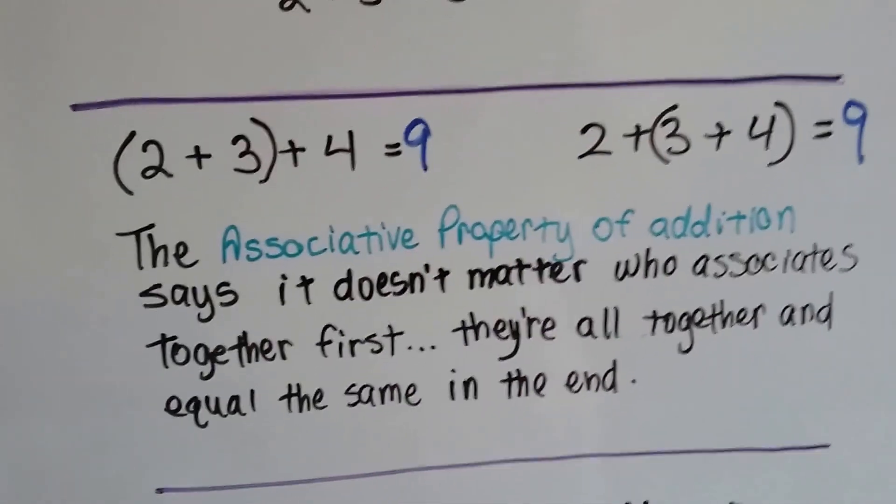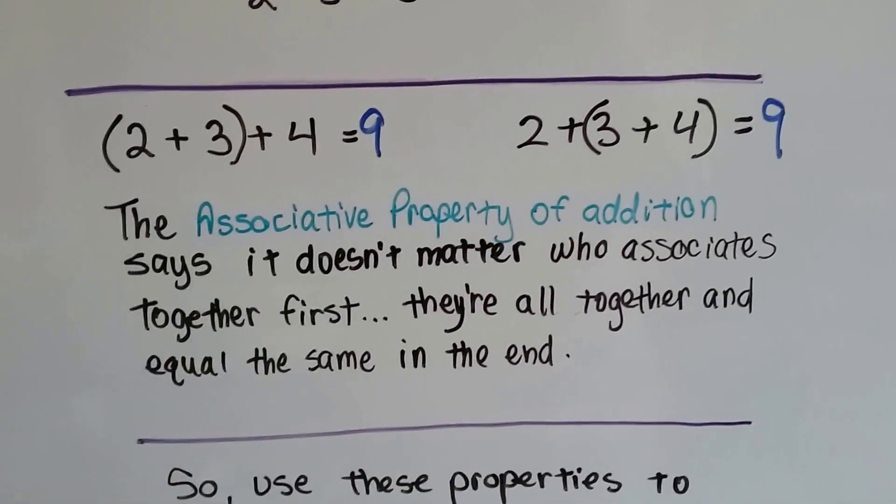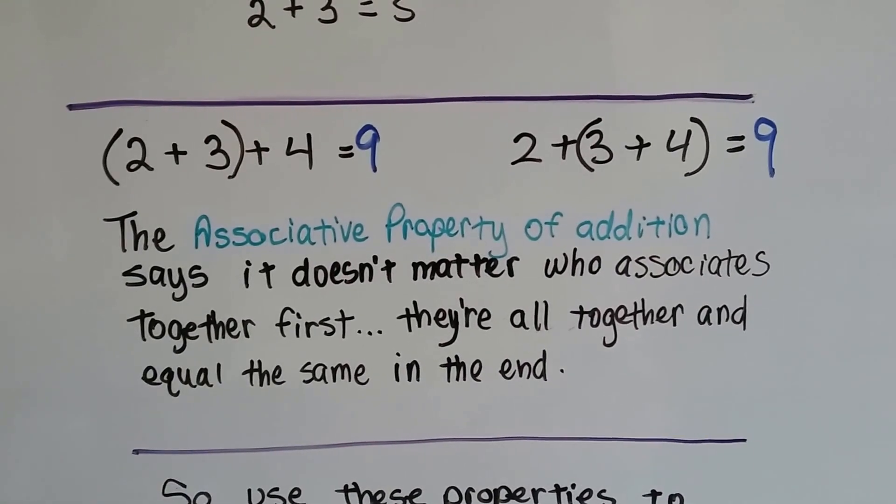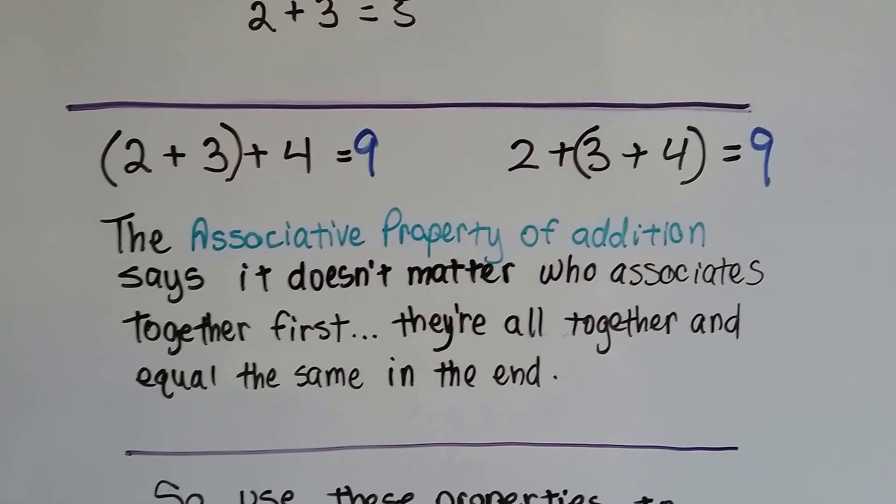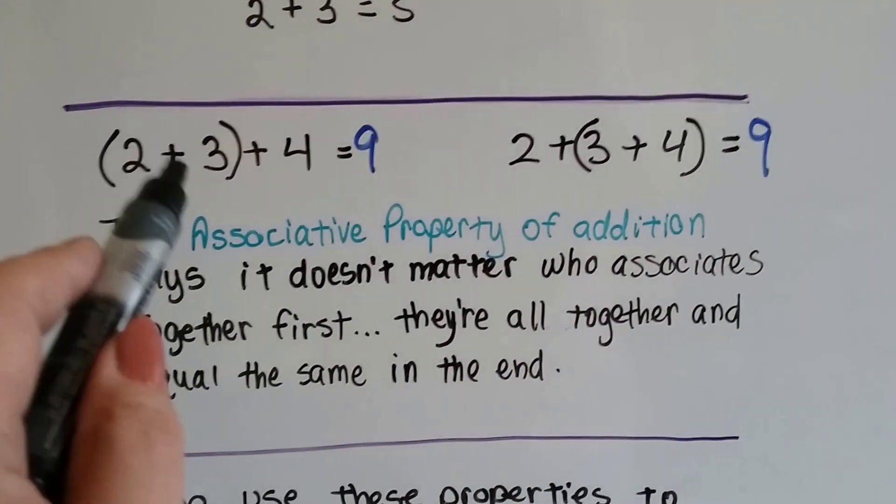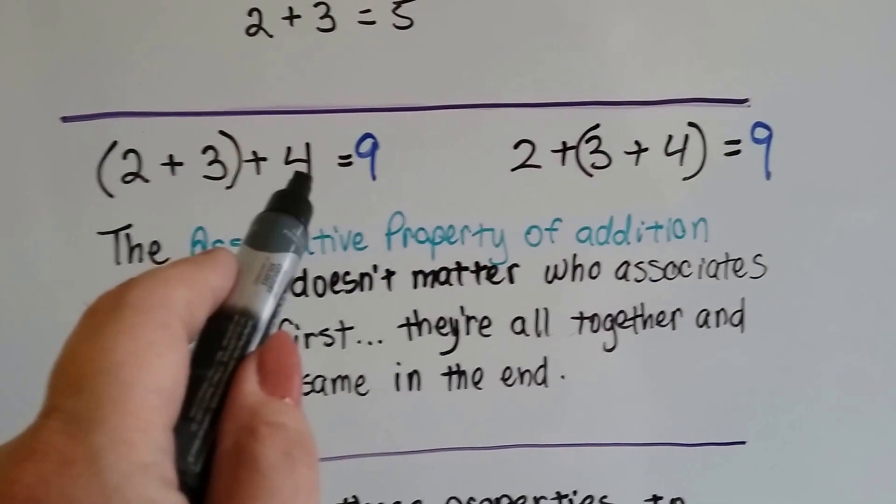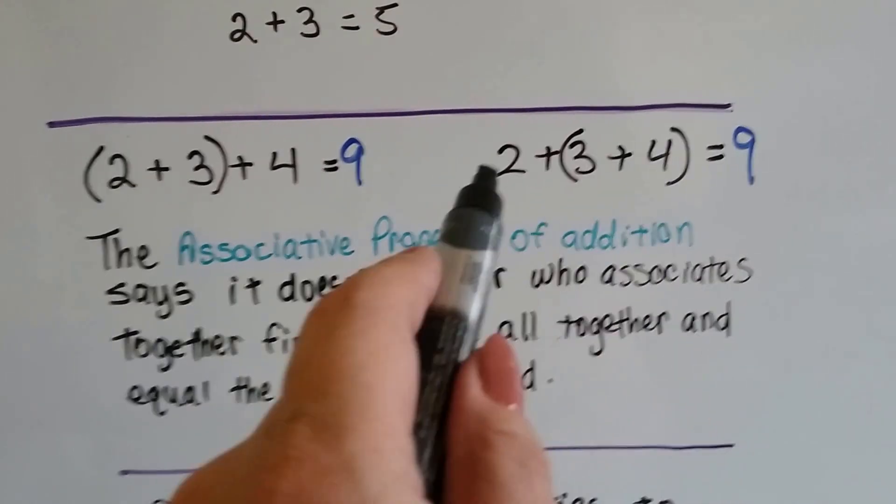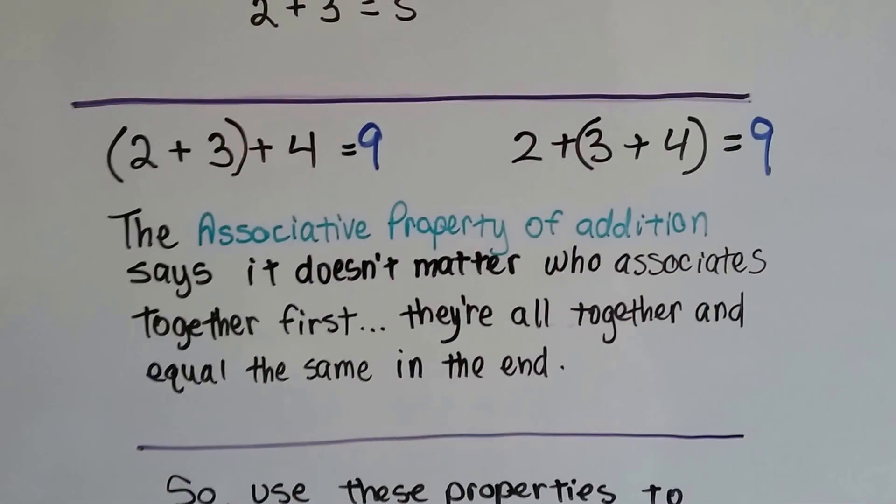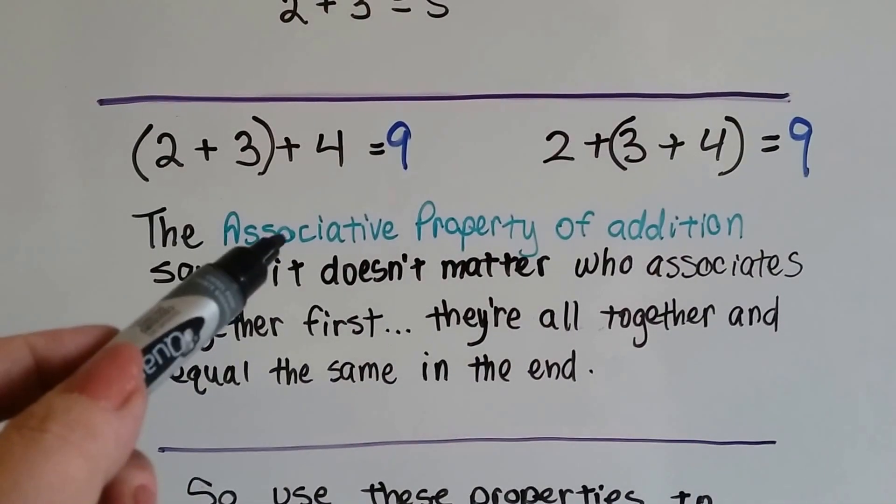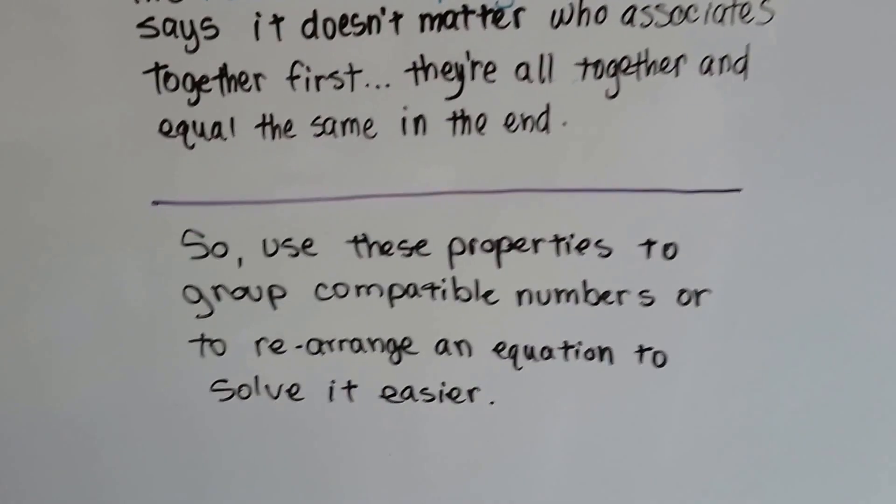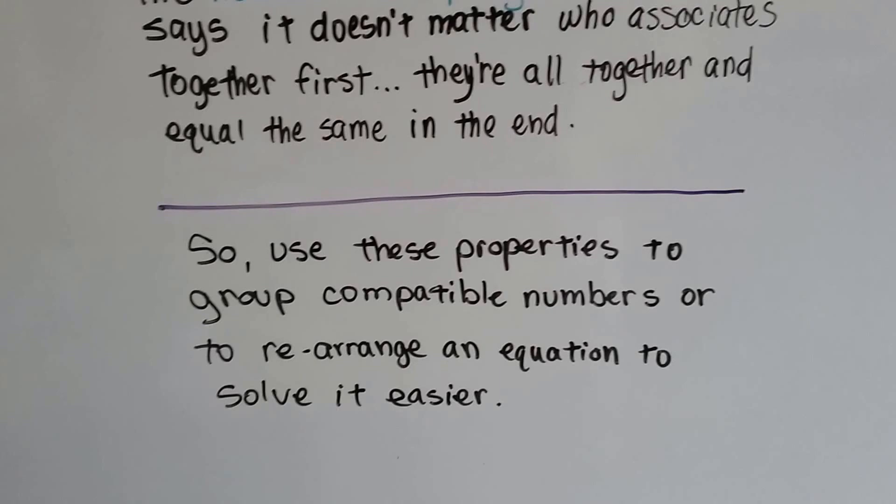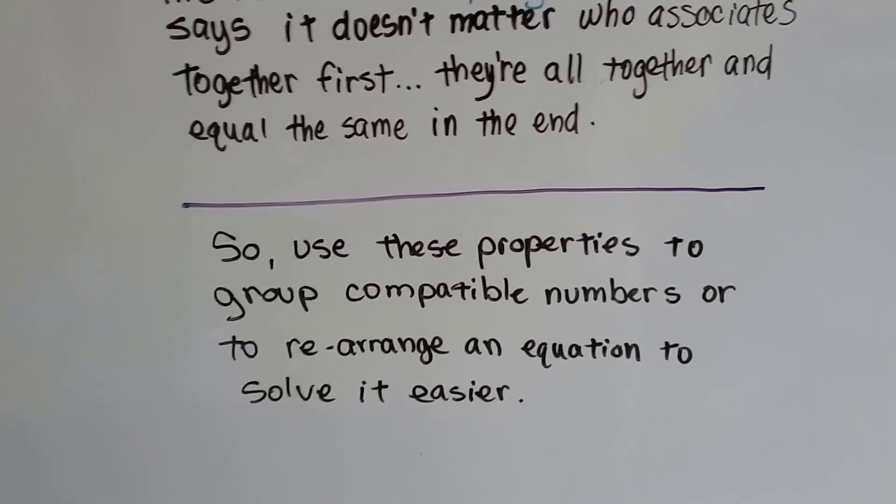Then, we have the associative property of addition. Do you know what an associate is? Like a business associate? It's like a co-worker. It's like somebody you hang out with. So the associative property of addition says it doesn't matter who associates together first. They're all together and equal the same in the end. If the 2 and the 3 hang out together and associate together, and then the 4 comes along, it still equals 9. And if the 3 and the 4 associate together first and hang out, and then the 2 comes along, it still equals 9. It doesn't matter who associates with who first. That's the associative property. So, these properties, we can use these properties to group compatible numbers together or to rearrange an equation so that it will be easier to solve.